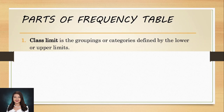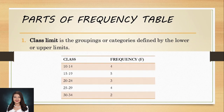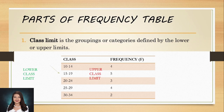Let's talk about the class limit. Class limit is the groupings or categories defined by the lower or upper limits. Let's take a look at this table. We have here the groupings: 10 to 14, 15 to 19, 20 to 24, 25 to 29, and 30 to 34. The 10, 15, 20, 25, and 30 are the lower class limits. While the 14, 19, 24, 29, and 34 are our upper class limits.